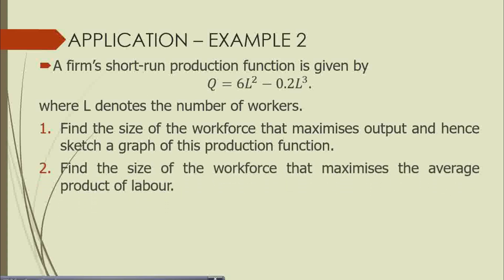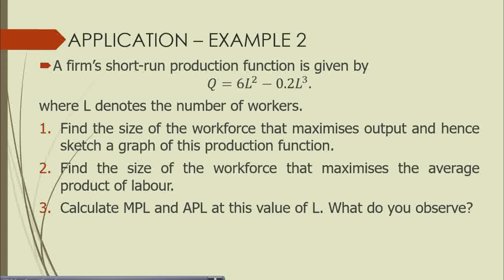We are also required to find the size of the workforce that maximizes the average product of labor. You may also be interested in finding the workforce size that maximizes the marginal product of labor, but here we are looking at the average product of labor. Then we will be required to calculate the marginal product and average product of labor at that maximum level of output found in part two, and indicate our observation. Let's begin by finding the size of the workforce that maximizes output and then sketch the graph.